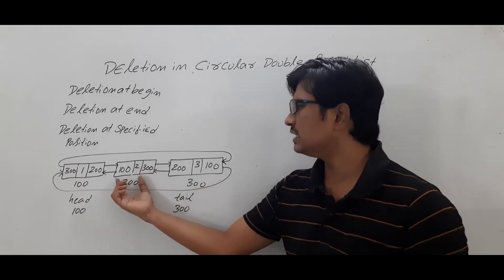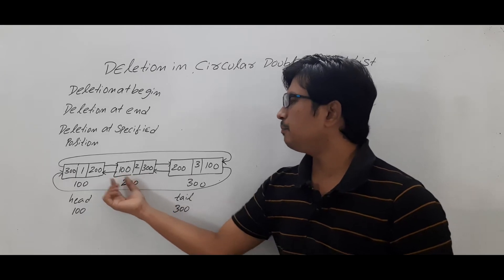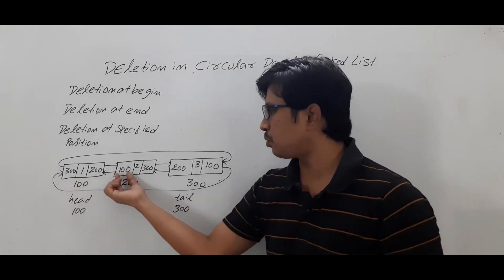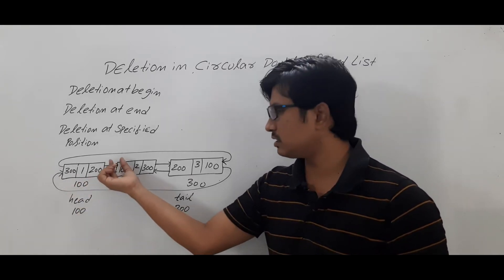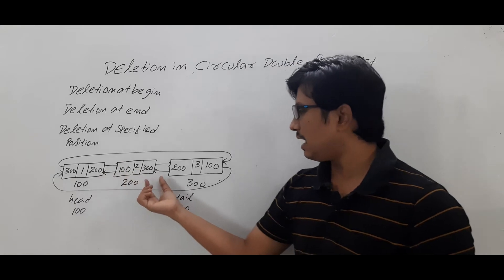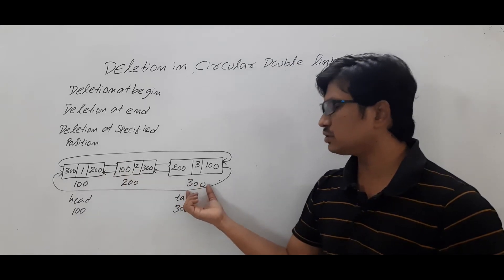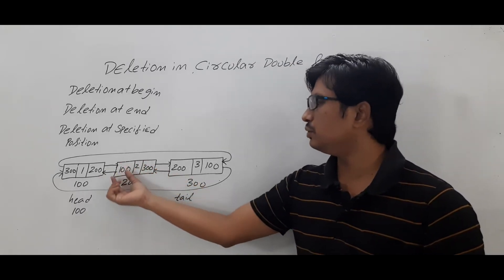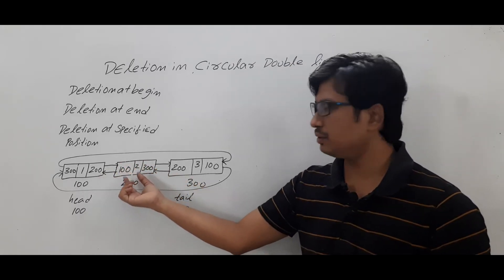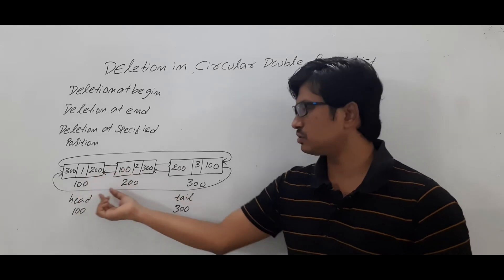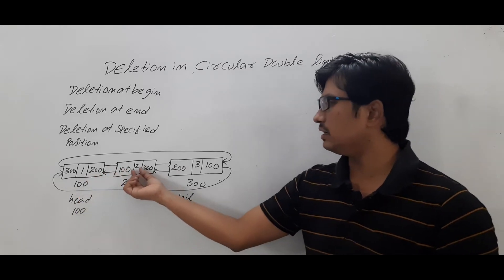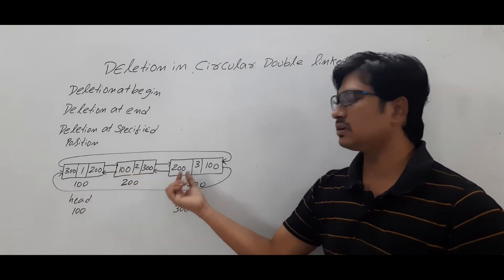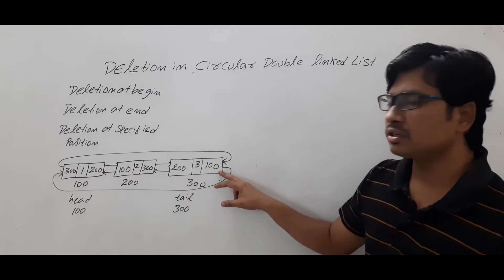Look at this node — the previous node address is 100, so it is pointing there. The address of the next node is 300. So a node consists of the address of the previous node, data (which is 2), and the address of the next node.